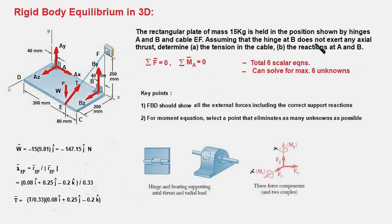For hinge B, we should note what has been mentioned in the problem — the hinge at B does not exert any axial thrust. So the axial thrust is ignored, and we show only the radial components By and Bz. The tension force at point E acts along EF, and the weight W acts downward at the center of the plate.